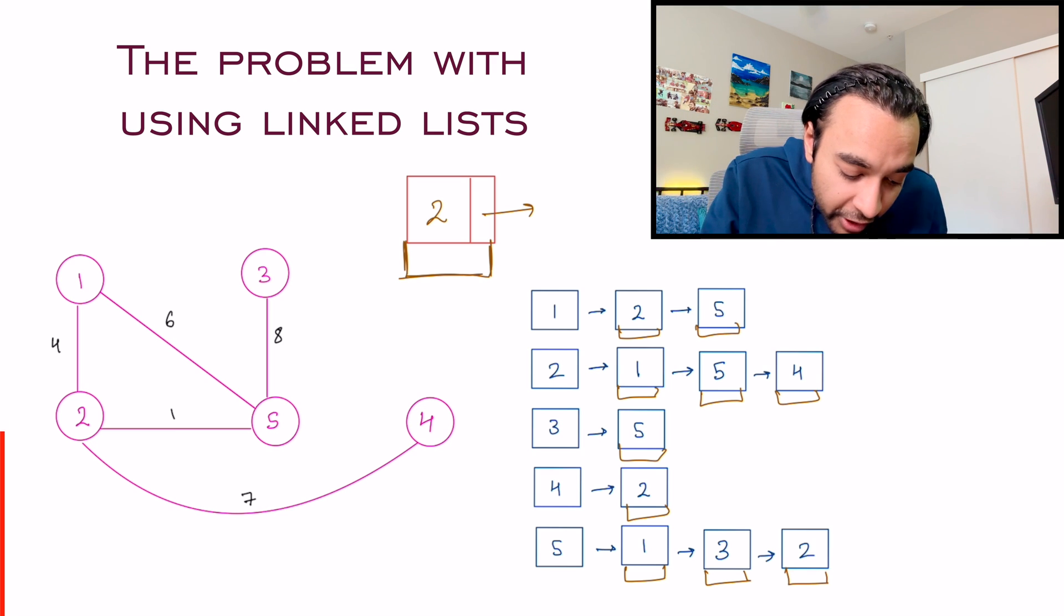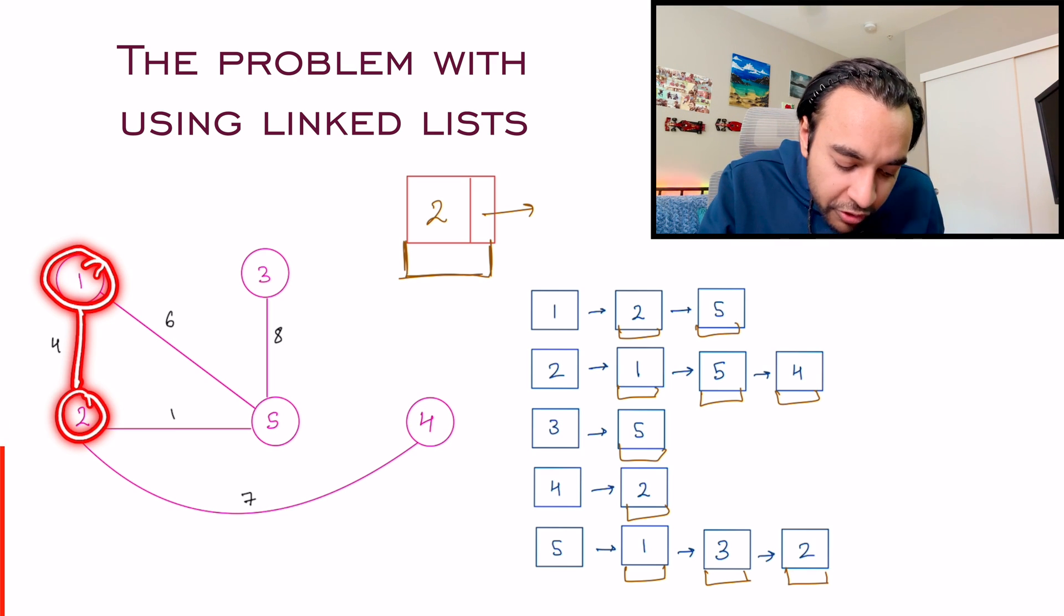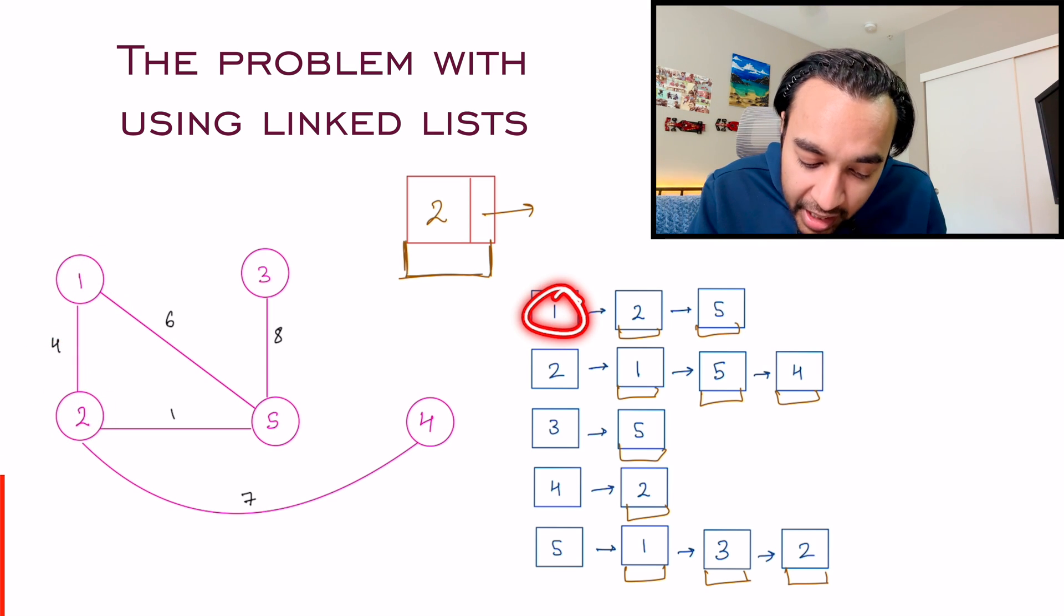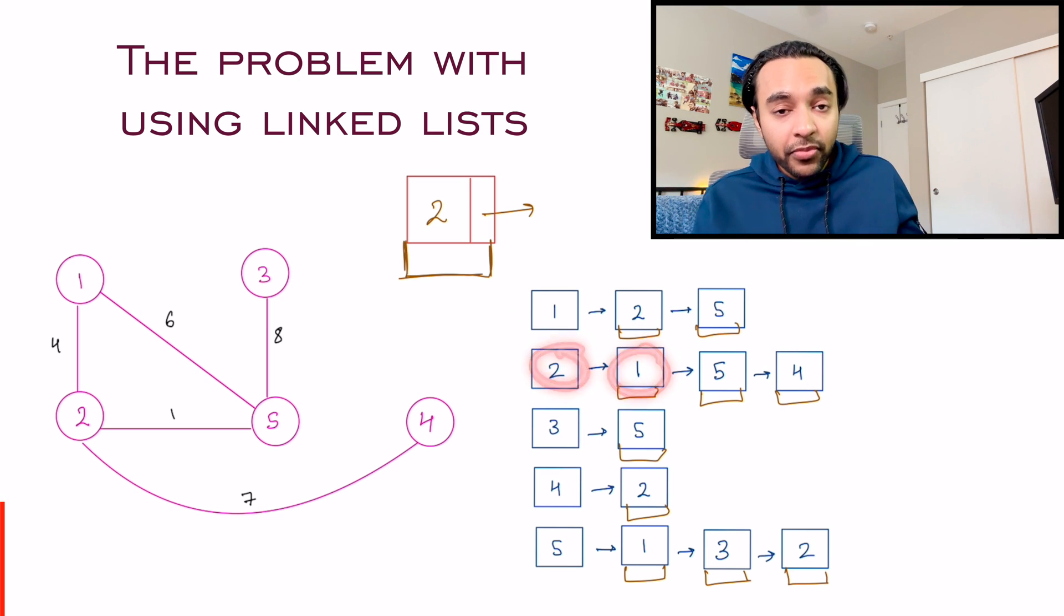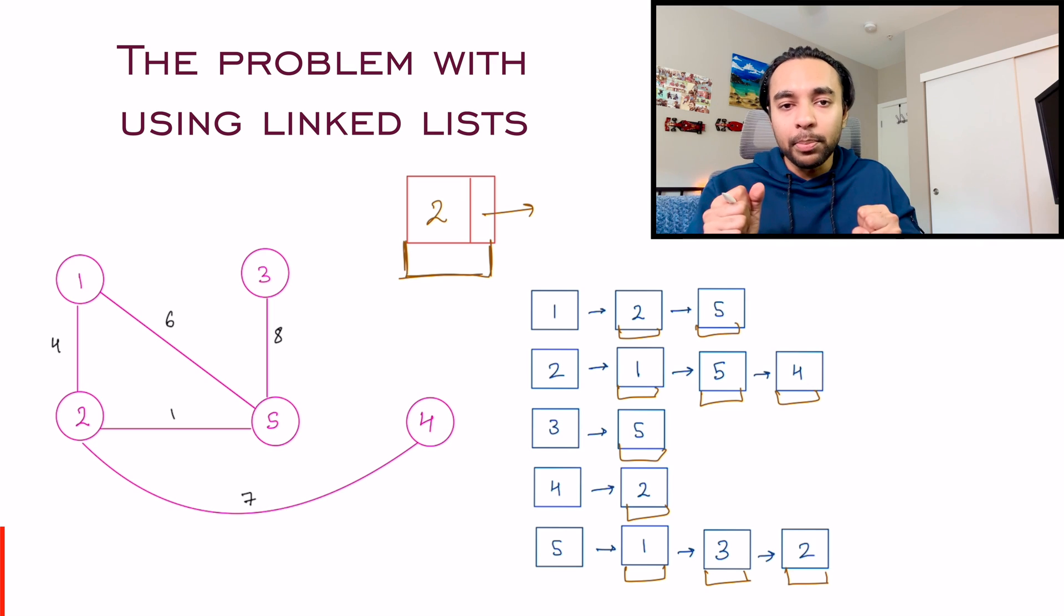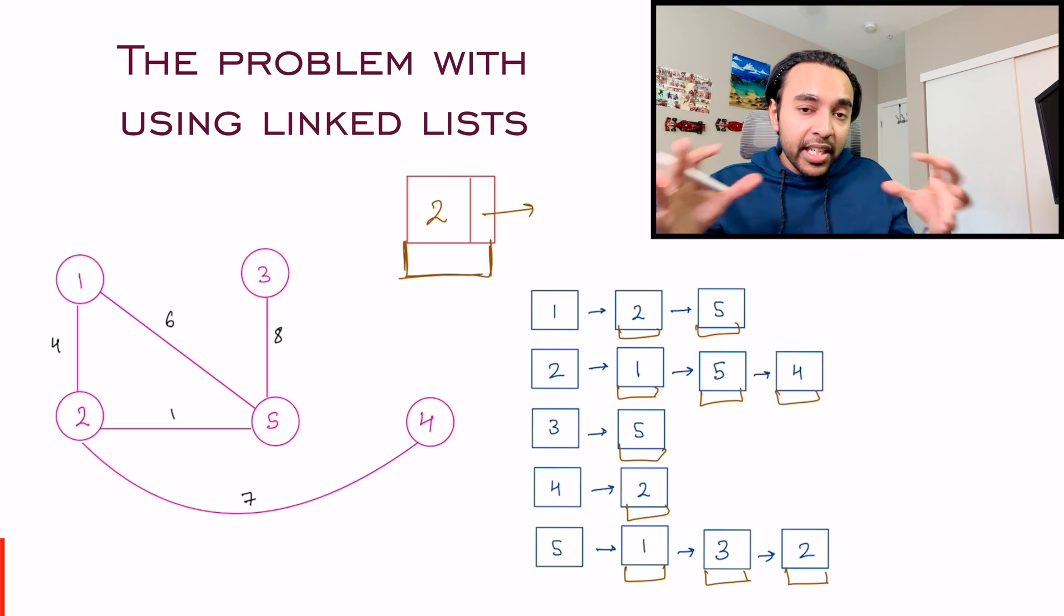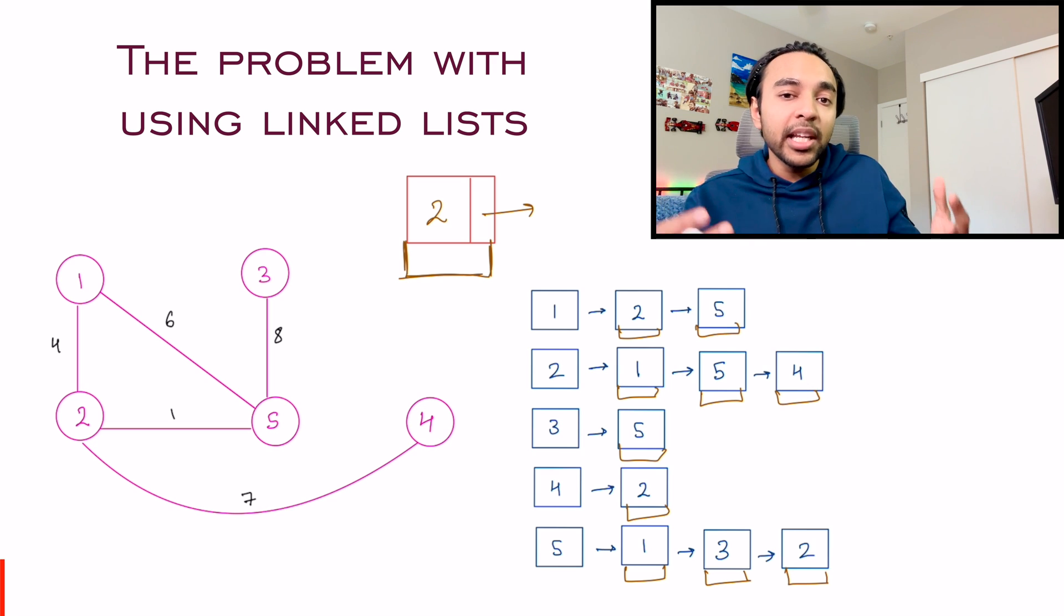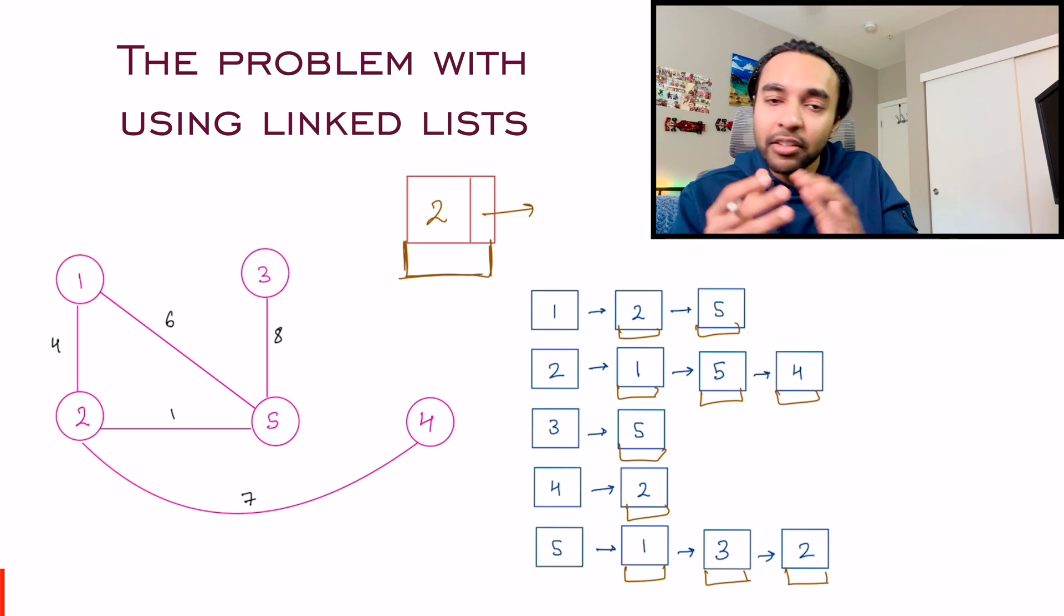And the problem becomes even worse because you have to account for the weight in both directions. So the weight between node one and node two is four and the reverse is also true. So when you are adding a weight over here, you will want to add a weight over here as well. And then handling all of this logic becomes a little bit complicated.